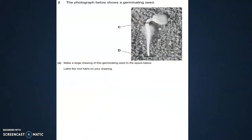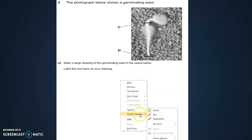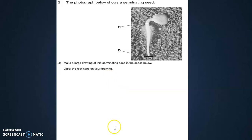Here is an example of the question. The photograph below shows a germinating seed. Make a large drawing of this germinating seed in the space below. Label the root hairs on your drawing. Remember that you are going to draw in this area. As I told you earlier, they have already told you to draw a large drawing, so you have to cover 80% of the area. Your drawing should be up to this point. It should be obvious and conspicuous, as I'm going to discuss in the next slides.